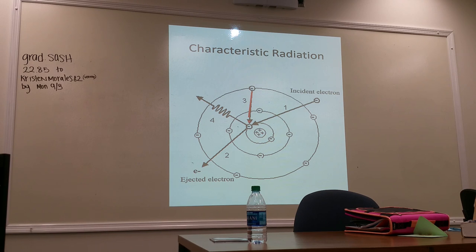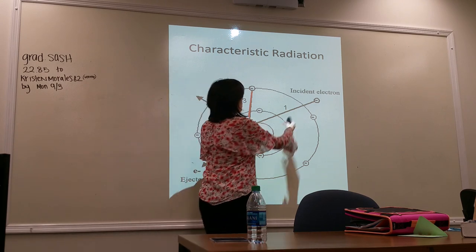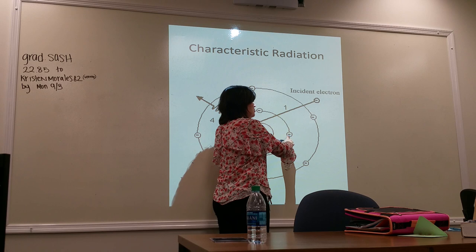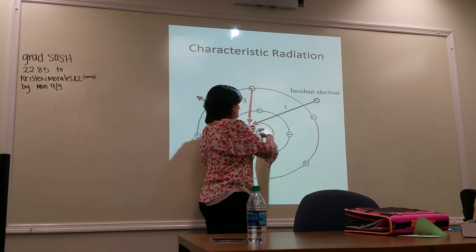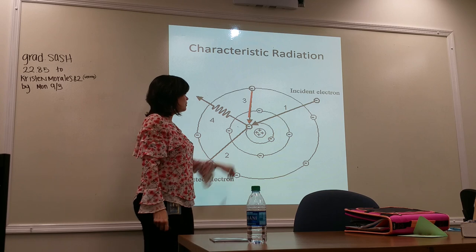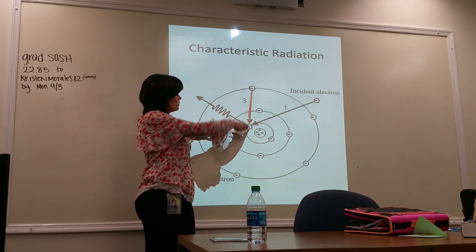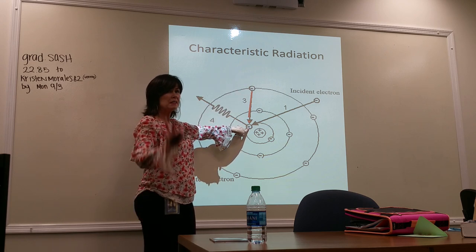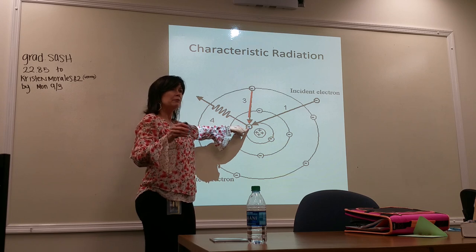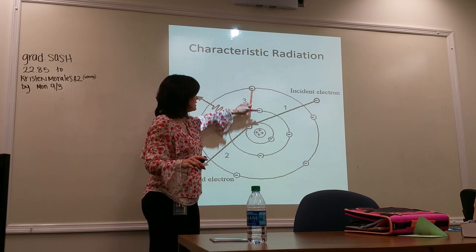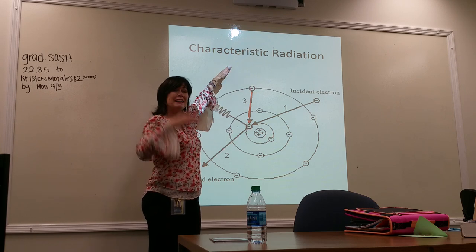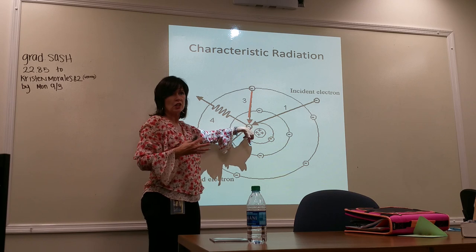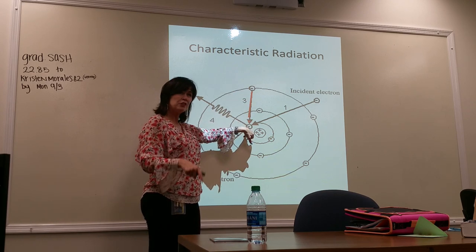When there is an inner shell vacancy, an outer shell electron is attracted to the positive nucleus and drops in to fill it. Electrons always move from outer to inner shell — never inner to outer. The outer shell electron doesn't have to come from the next adjacent shell; it can come from a completely outer shell.